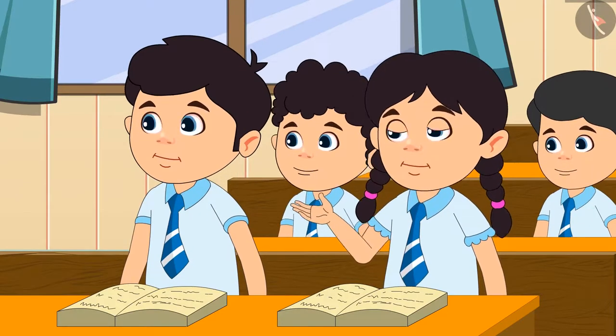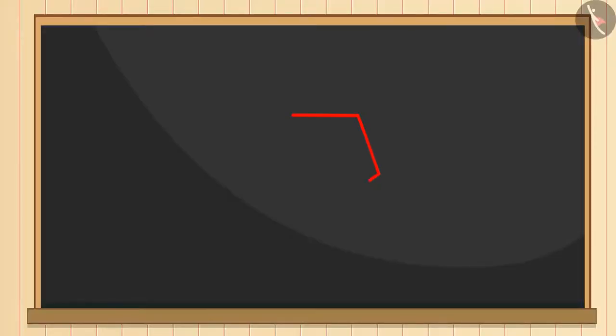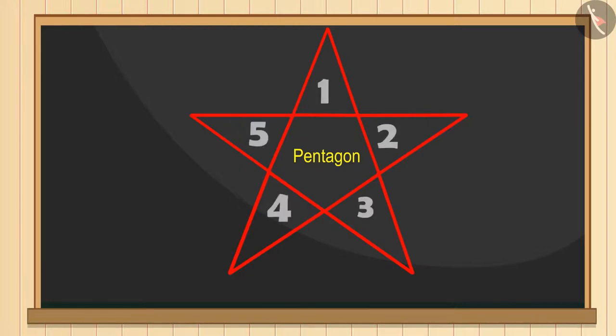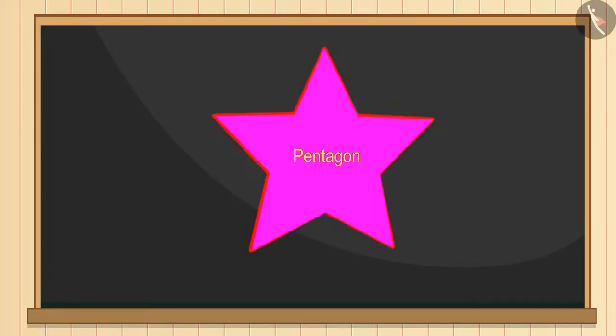See Priya, to make a star first of all you need to make a pentagon. Now make a triangle on each of its edges. You have to make five triangles like this and see we have formed a star.